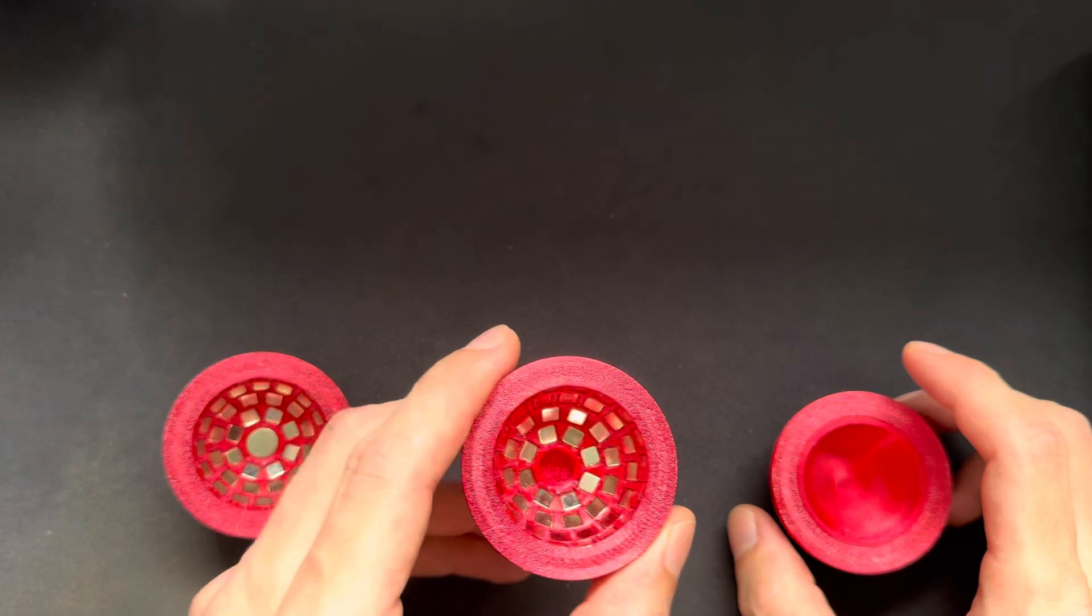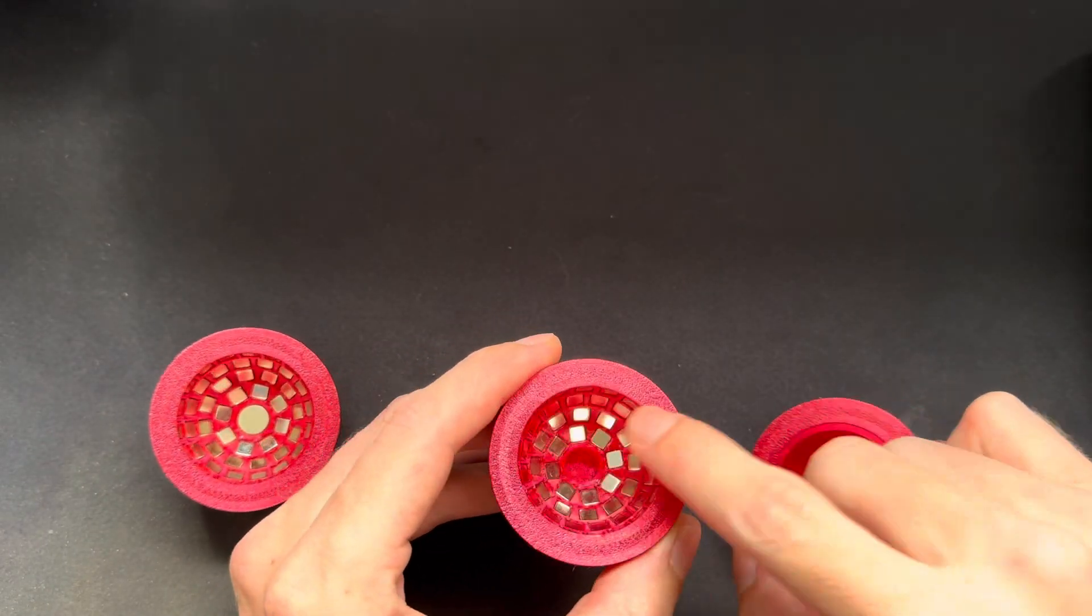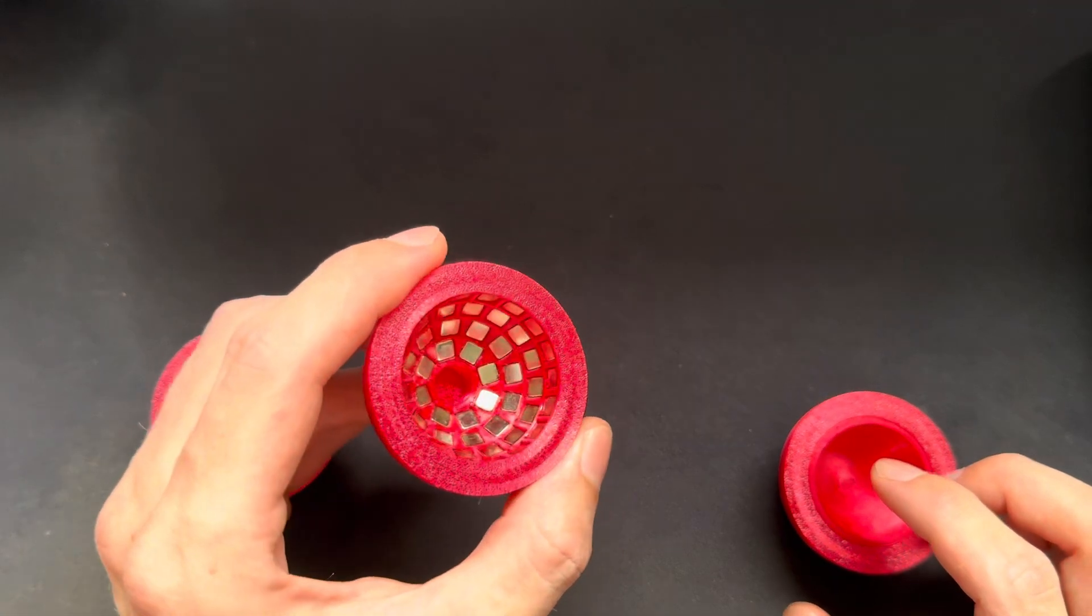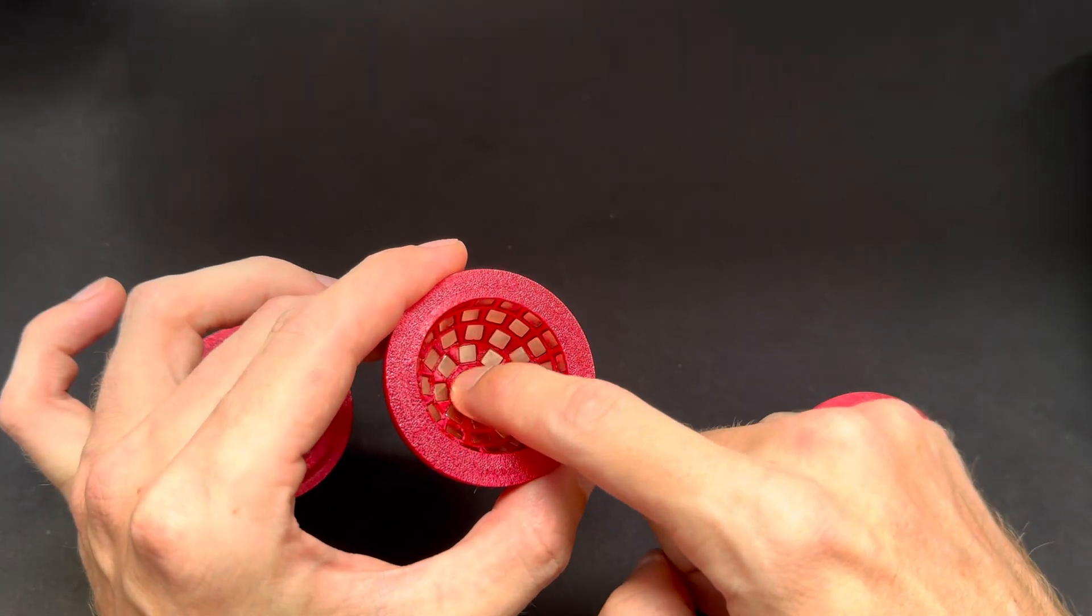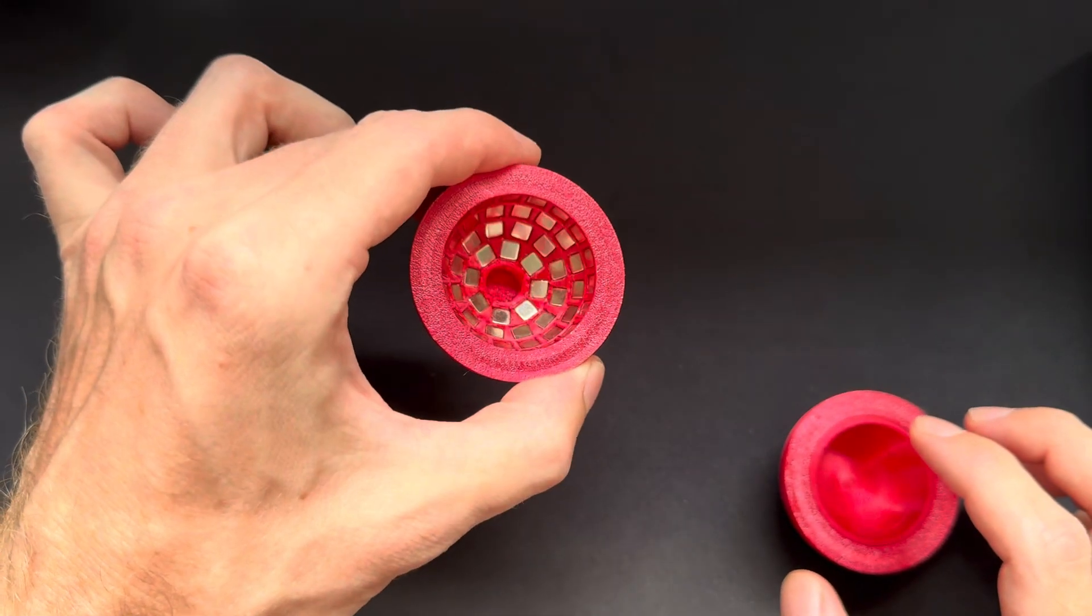So here is the original that you might already know. I have 54 of these 5mm cube magnets arranged in this bowl-shaped pattern and as you can see in the center hole here there is no magnet. This is like the original design.